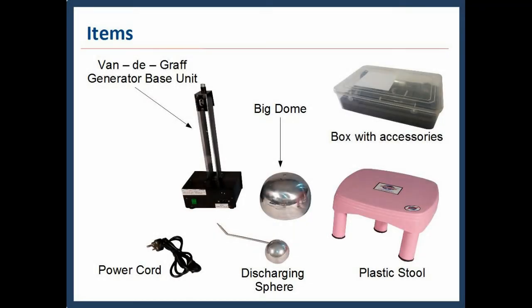Following items are provided with this kit: Van de Graaff generator base unit, big dome, box with accessories, power cord, discharging sphere, and plastic stool.